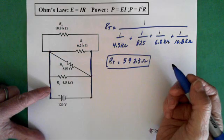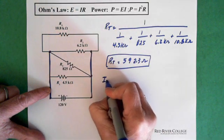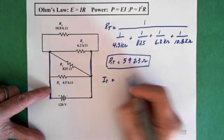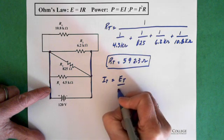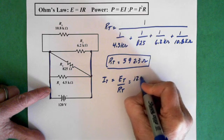So now we can also solve for total current using Ohm's Law. So I total equals E total over R total. So we have 120 volts divided by 592.3 ohms, which gives us 202.58 milliamps.